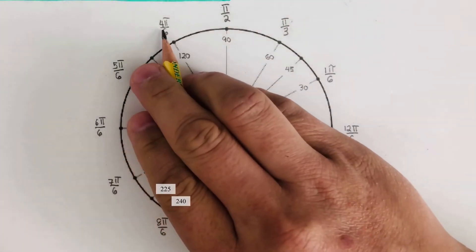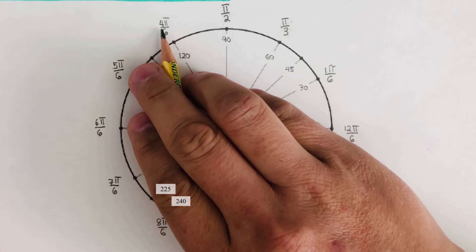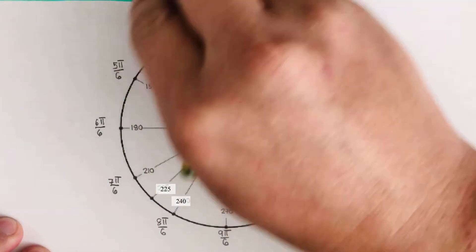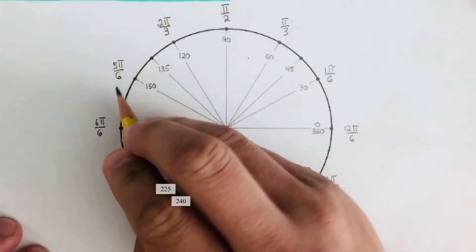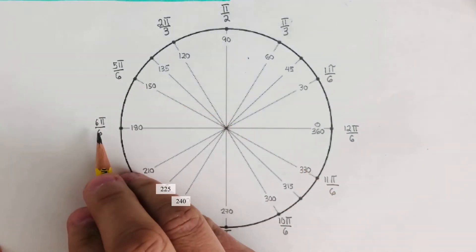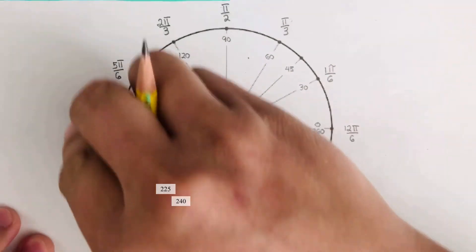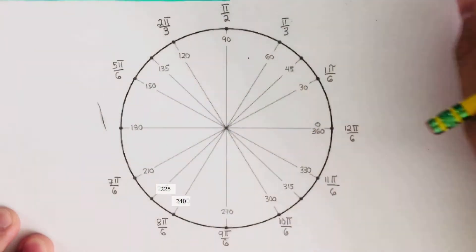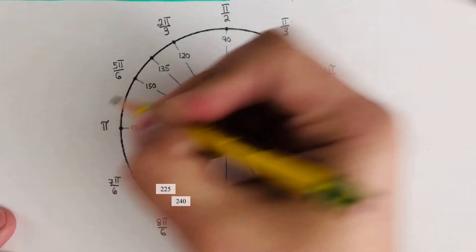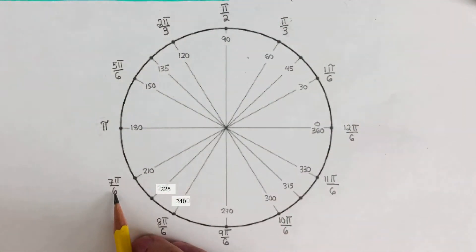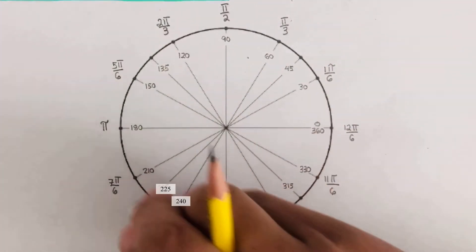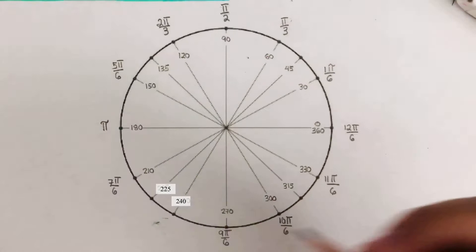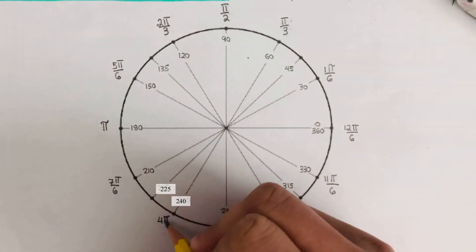This one — 4π/6 — can also be reduced; it's divisible by 2, and this becomes 2π/3. This one — 5π/6 — cannot be reduced, so we keep this. And 6π/6 is actually just π. The 7π/6 cannot be reduced. But 8π/6 — 8 and 6 are divisible by 2 — that becomes 4π/3. So I'm reducing it to lowest term: this is 4π/3.